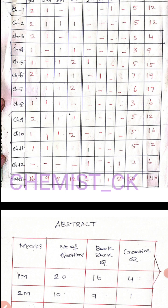In lesson 4, we have a 1-mark, 3-mark, and 5-mark. We don't have a book pack. The first question is 3.